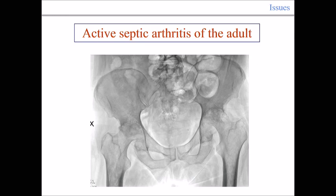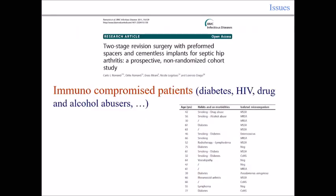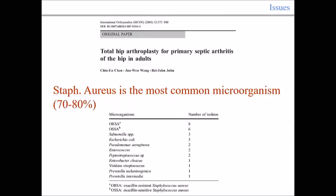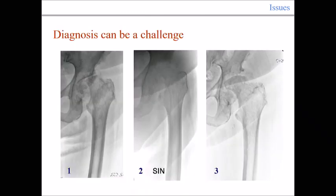The different situation is active septic arthritis of the adult. It can affect young patients, but many times it is not a young patient. You find this mainly in diabetic patients, HIV patients, and drug and alcohol abusers. Staphylococcus aureus is the most common microorganism, responsible for 70 to 80% of these infections. The diagnosis can again be a challenge.